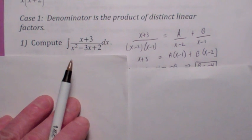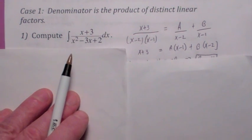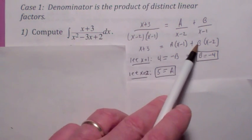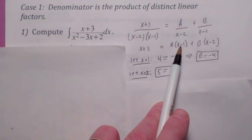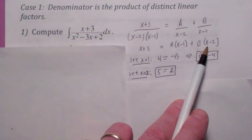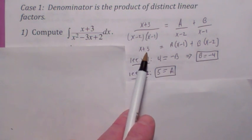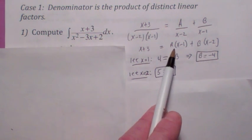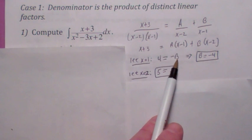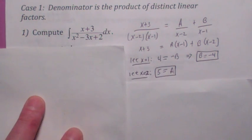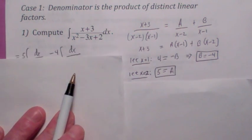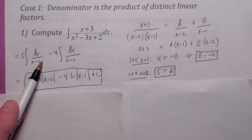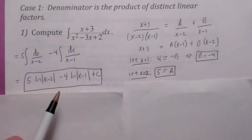When you clear the fractions by multiplying both sides by the LCD, you get this. To find a and b, there are two basic methods. This is an identity true for all x, so let's pick x equal 1 — this term drops out, giving negative b equals 4, so b equals negative 4. When you pick x equal 2, this term drops out, so a equals 5. Once you find a and b, you plug them in and integrate. This becomes 5 natural log absolute value x minus 2 minus 4 natural log absolute value x minus 1 plus c.